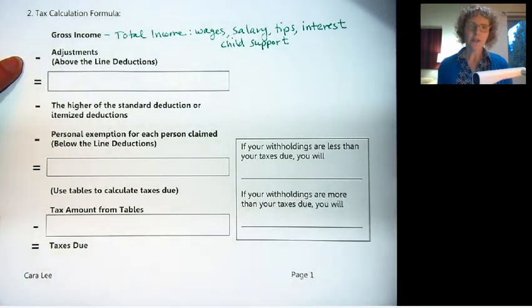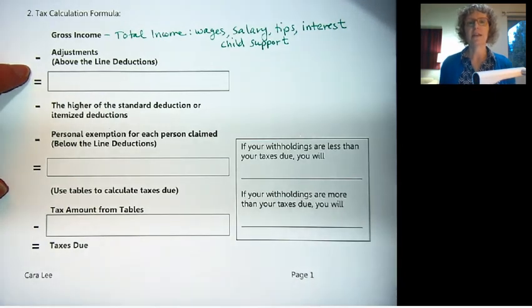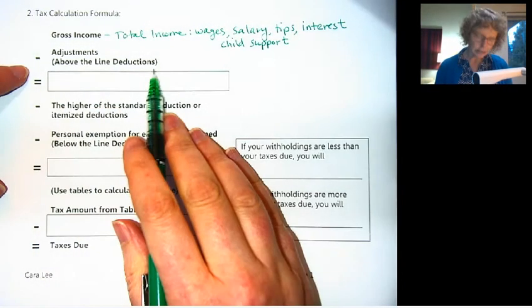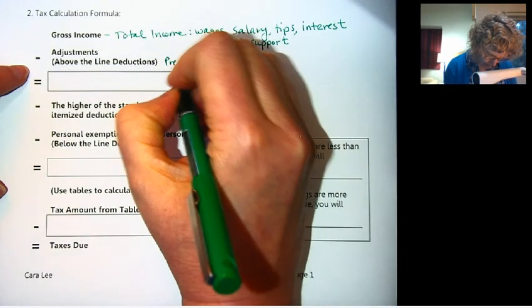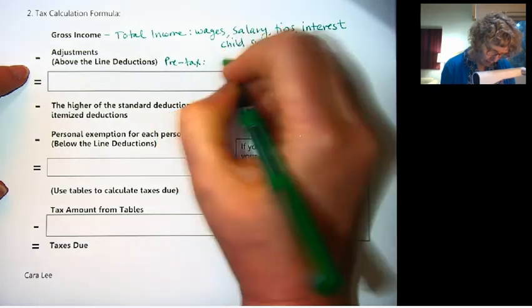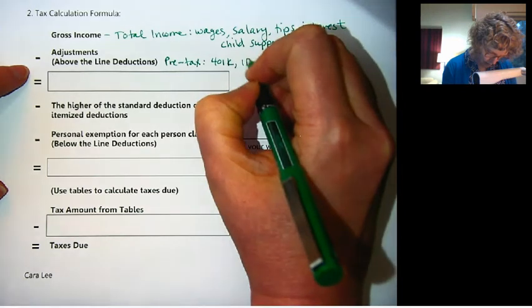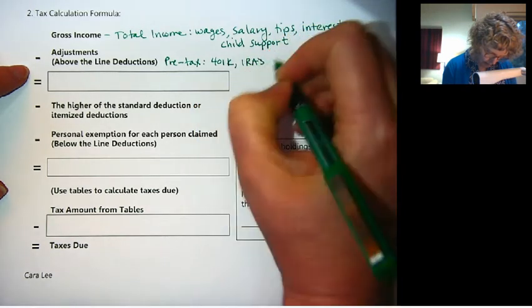Then we have adjustments, which are called above-the-line deductions. These are things that are paid pre-tax, so things like retirement, IRAs or 401Ks, and also benefits. If there's anything that you get subtracted out of your paycheck before they calculate the taxes, that is called an above-the-line deduction. So this is pre-tax, things like 401K, IRAs, and benefits.